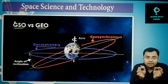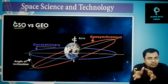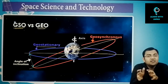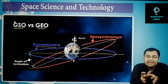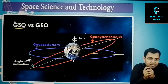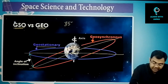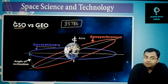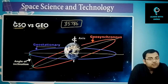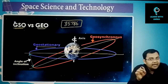Geosynchronous orbit is in the equatorial plane but can have a slight inclination — 5, 10, or 20 degrees. The height is 35,786 kilometers. Geosynchronous orbit can be elliptical in nature, though it can also be circular. Generally, most geosynchronous orbits tend to be elliptical.